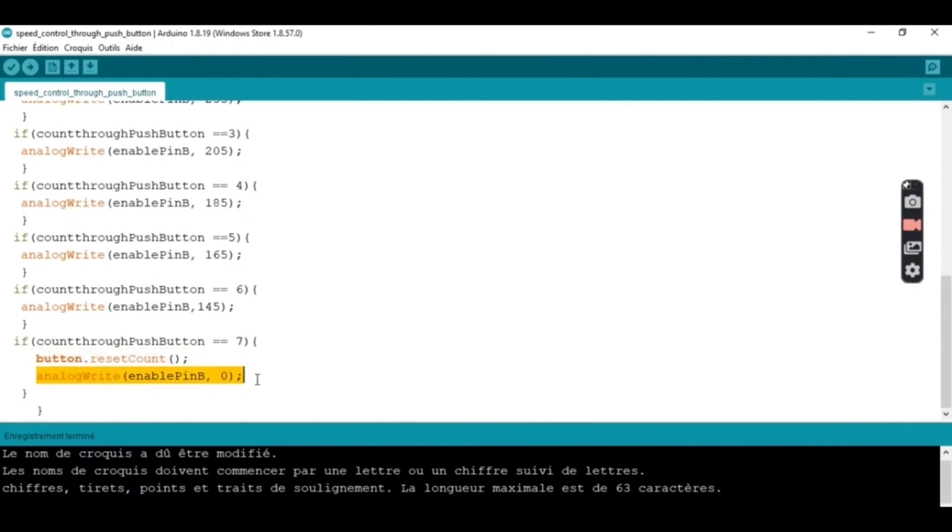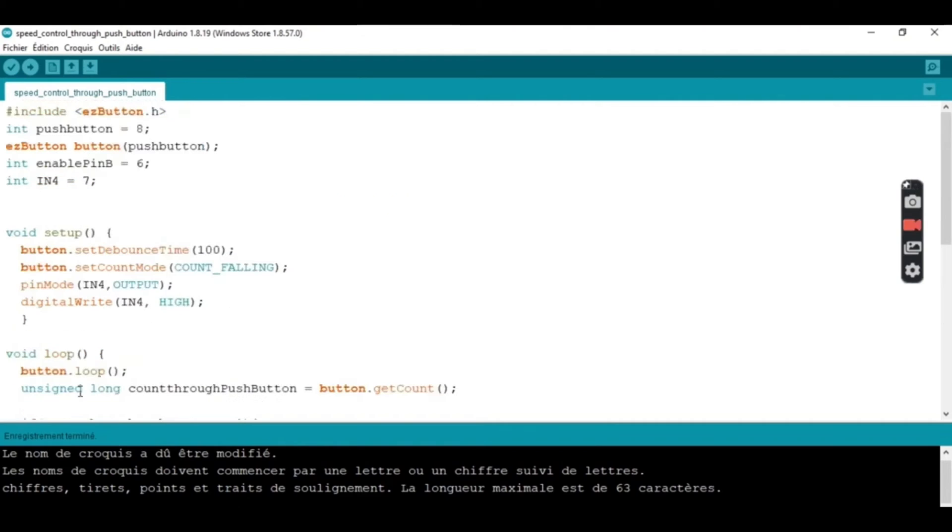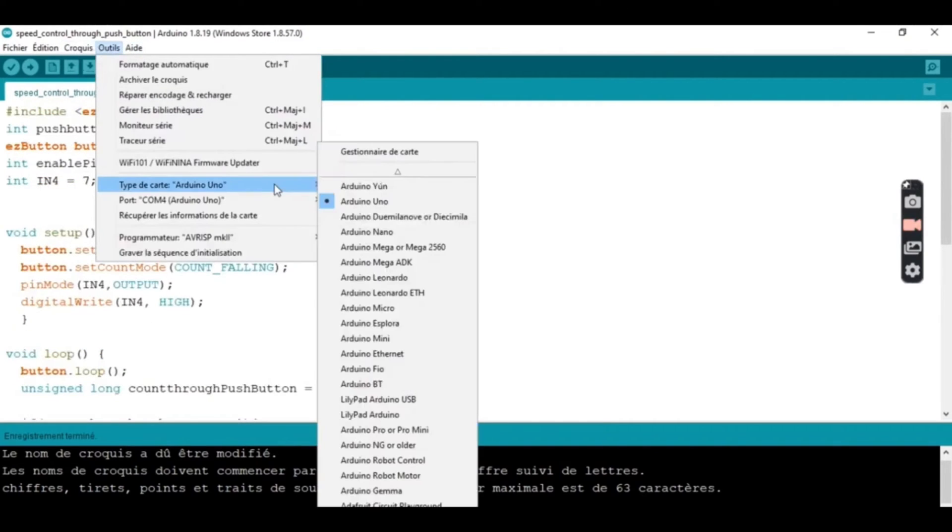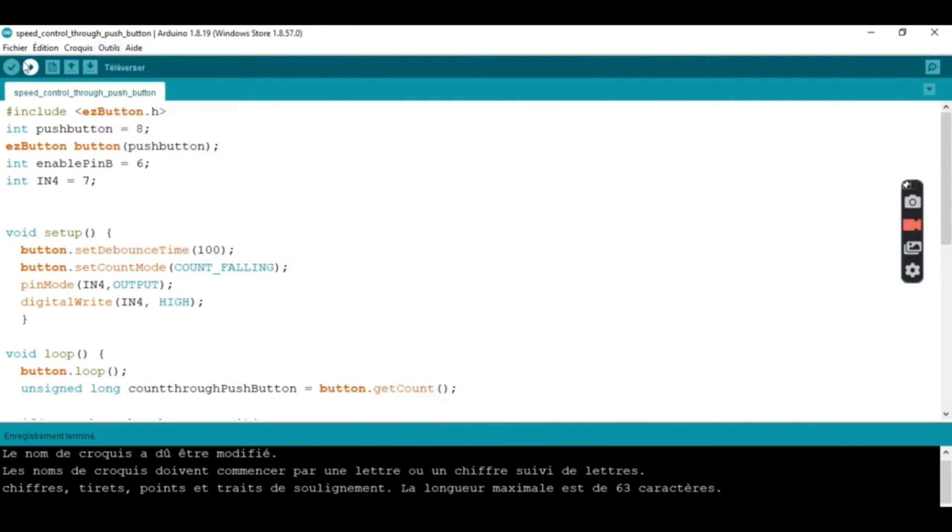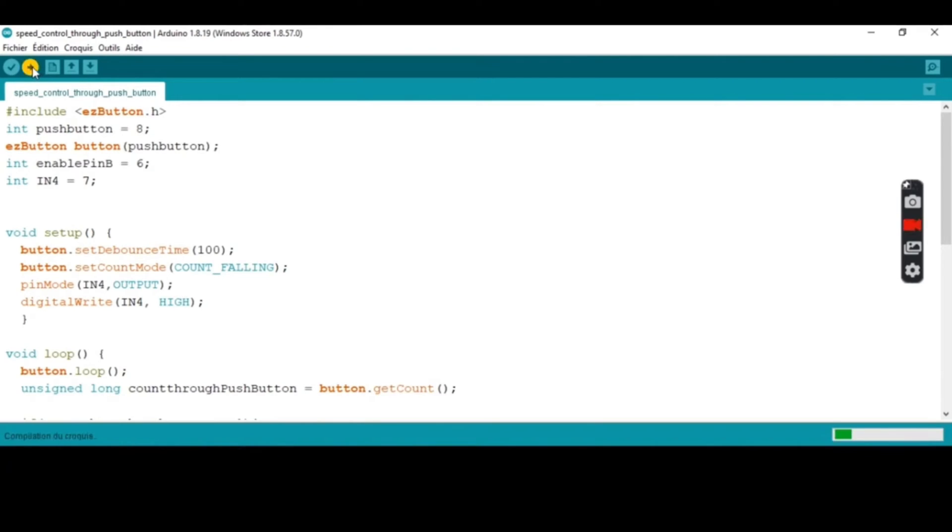So the board is Arduino Uno, the port is COM4. Now we send the program to our board. We upload the program. I'm uploading. So it's uploading. Okay, it's done.